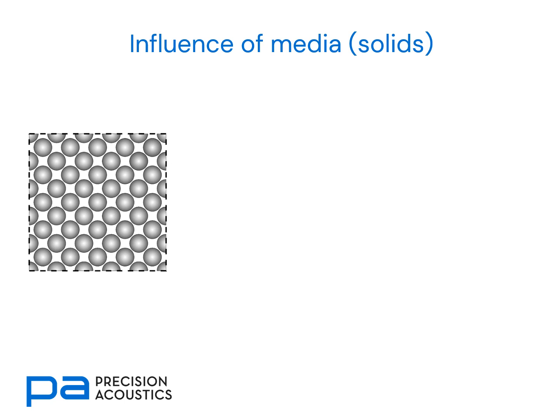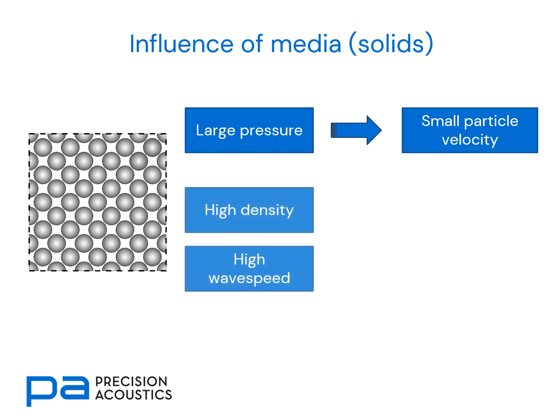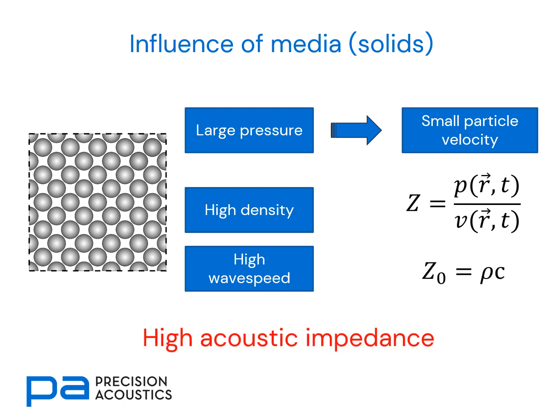The final situation is when we consider solids. Because the particles are bonded very closely to one another, we need to exert quite a large pressure in order to get particles to move. When they do, they have quite small particle velocity because there are many restoring forces trying to bring each particle back to its equilibrium position. Because of the close packing of particles within a solid, there is much higher density and waves can propagate much more rapidly, giving a higher wave speed. So, as before, regardless of specific or characteristic impedance, we have a high acoustic impedance in solids.